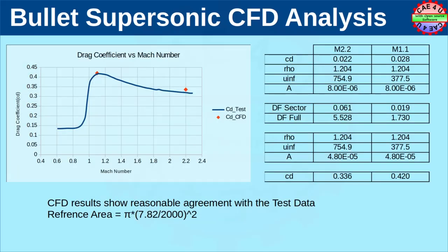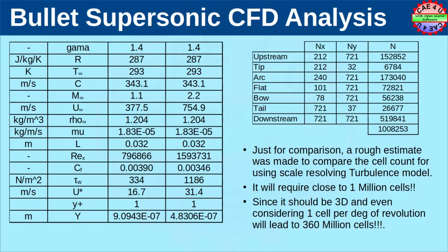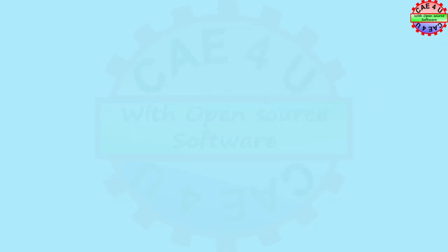Let us plot the results obtained from CFD and compare with data obtained from the literature. There is a reasonably close match between the CFD results and the experimental results. The reference area used corresponds to the maximum diameter of the bullet. For completeness, we checked the mesh requirement for a turbulent simulation: for scale-resolving models the computational size could be 360 million cells or more. Wall modeling can reduce the number of cells but it would still be very large for our hardware. Hope you liked the video. The files are available at a nominal price and the details are available in the description. See you in the next video.